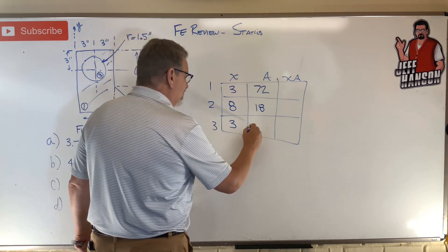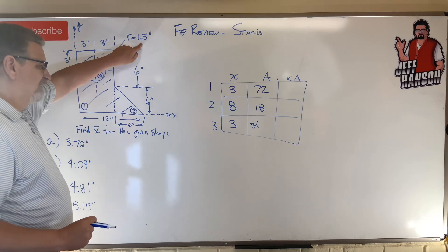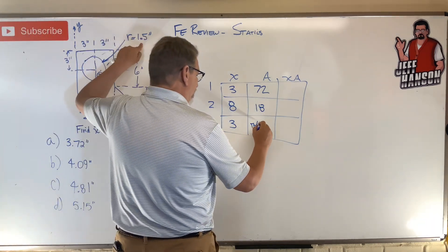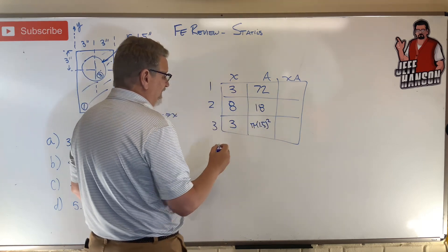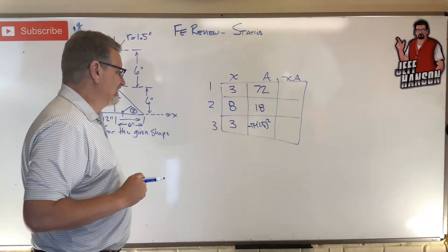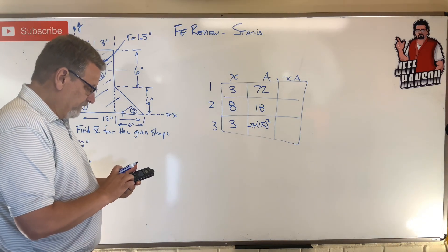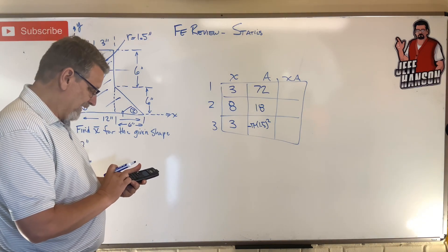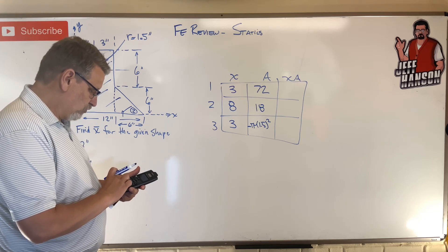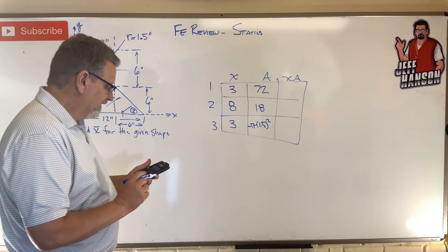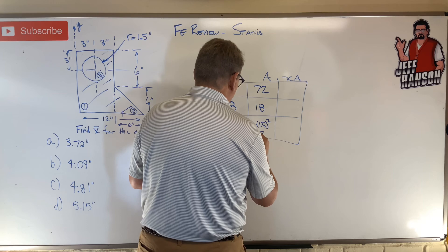And the circle is pi times r squared, there it is, 1.5 squared. Now the thing about the area, though, is it's a negative. It's a subtract away, isn't it? How much is that? Let's get that in a number here. Let's go. Here we go. Pi, 3.14159 times 1.5 squared equals 7.07. That's negative.